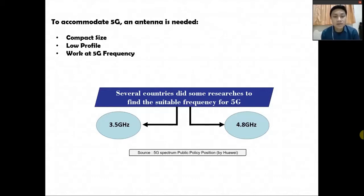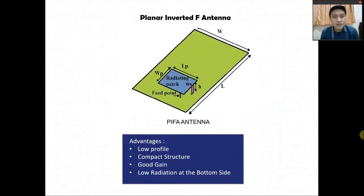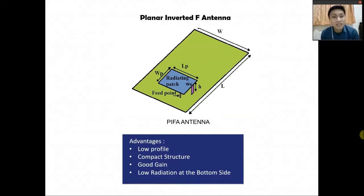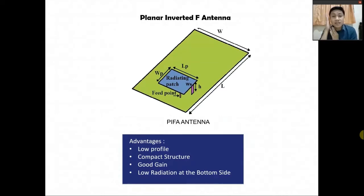I recommend you to read it to find more about 5G itself. The antenna I'm going to design takes the shape of a Planar Invert-F antenna, or PIFA antenna. It's a commonly used antenna for mobile devices because it has several advantages: it's low profile, compact in structure, has good gain, and has low radiation at the bottom side. The low radiation is actually safer for the user because when we use a smartphone, the bottom side faces our skin, so it will be safer to use this kind of antenna.